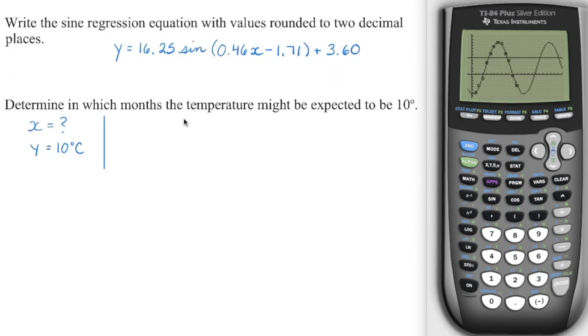And then we're asked to determine in which months the temperature might be expected to be 10 degrees. So going back to my little sketch, I can see that temperature is the y-axis. I'm looking for the number of months, which is the x-axis. So the easiest way to do this, it doesn't specify graph or equation, but if I put a 10 here, I don't want to rearrange this to get x. So I'm just going to go into my graph and I'm going to put in 10 for y2. We're going to graph it and we're going to get that point of intersection.